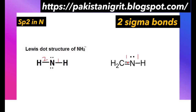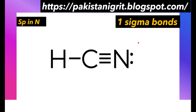We count only sigma bonds, so: one sigma bond with this carbon and one sigma bond with this hydrogen — two sigma bonds means sp2 hybridization. While if nitrogen has only one sigma bond, like in the case of hydrogen cyanide, nitrogen is forming one sigma bond and two pi bonds. One sigma bond means sp hybridization in nitrogen.